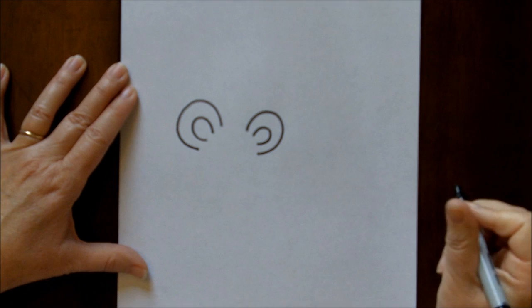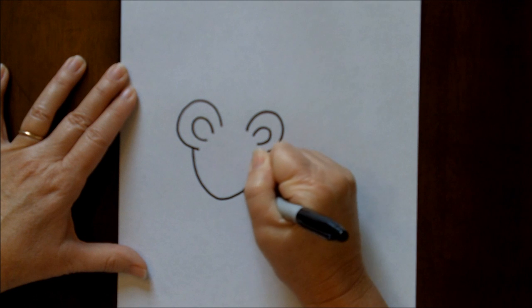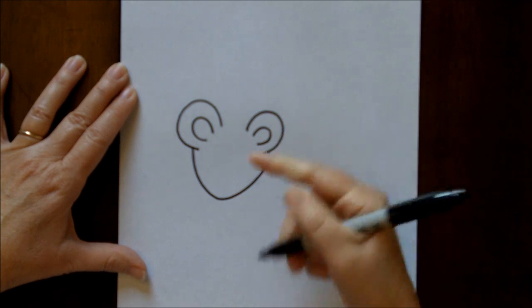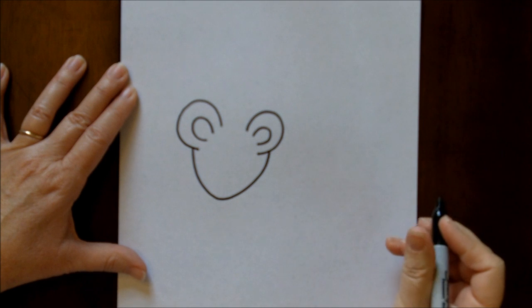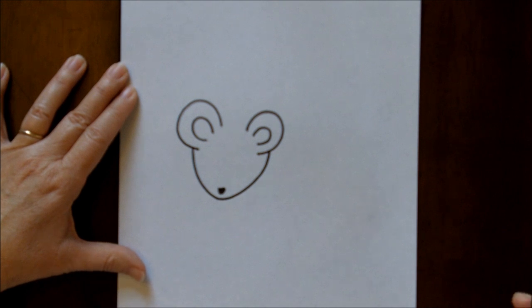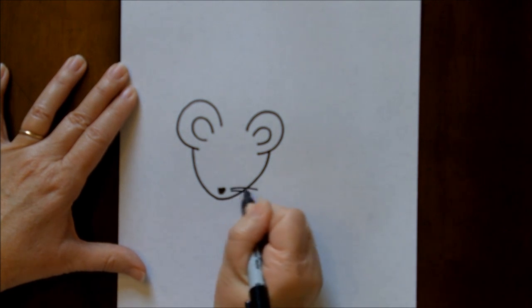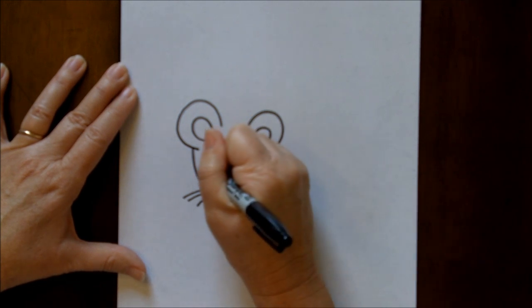For his face, we are going to come down and his face kind of has a little bit of a pointy edge right here at the end for his nose. Let's make his nose, fill it in with some black marker, and we can add some whiskers. Two or three whiskers would be just fine. His eyes are kind of beady and small.